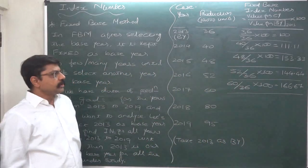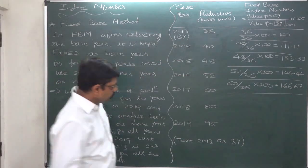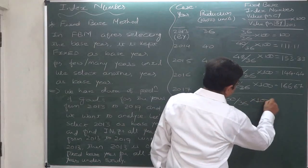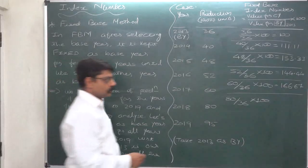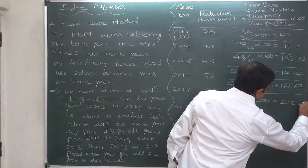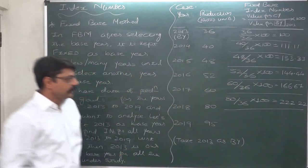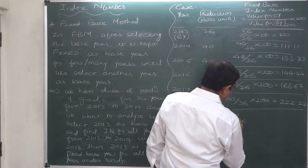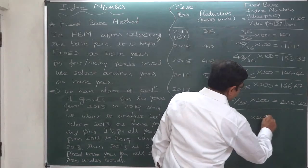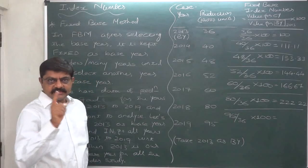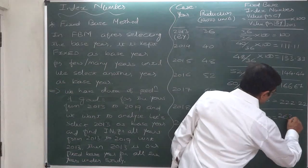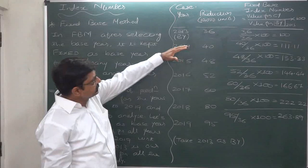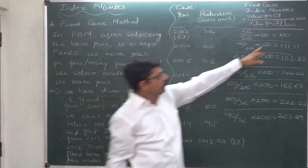That represents a growth of about two-thirds over the production of 2013. In the year 2018, it is 80 divided by 36 into 100, which is more than double: 222.22. And for the year 2019, it is 95 divided by 36 into 100, which comes to 263.89.